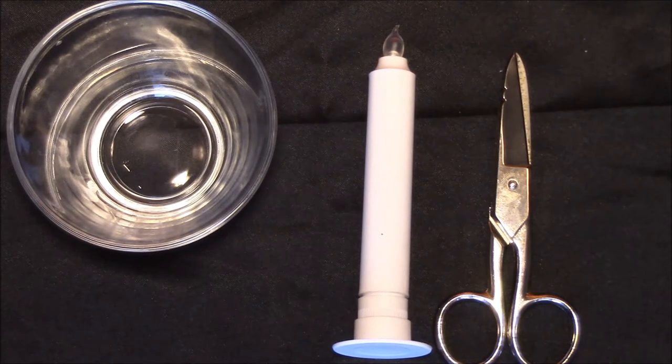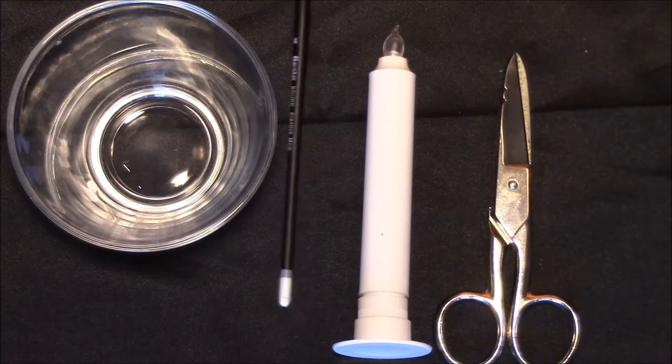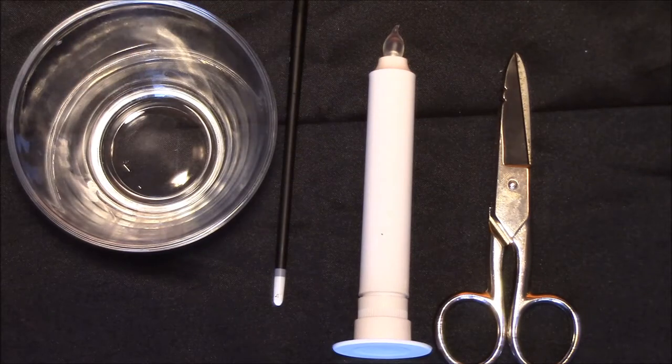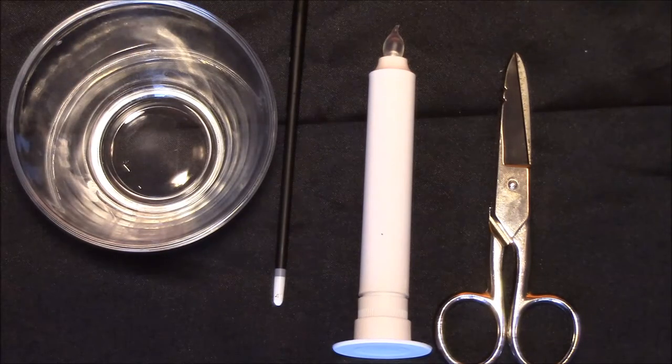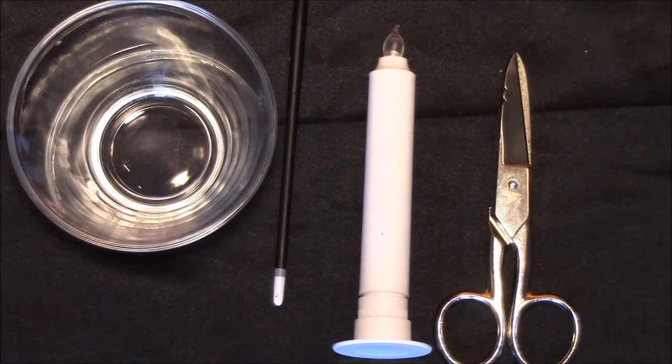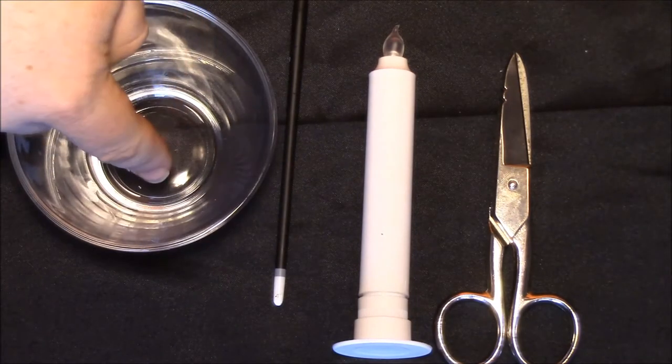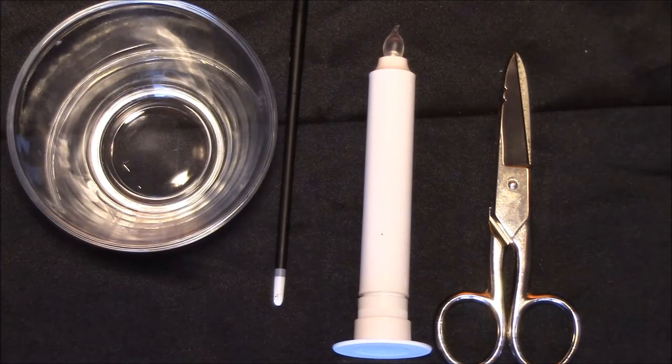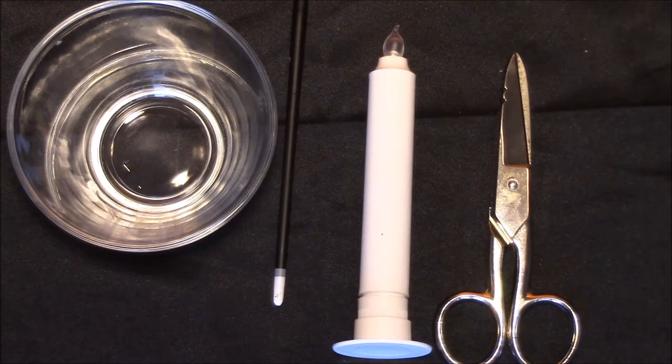Next thing you need is a poking device. Basically I'm using the end of a paintbrush. Once we get into the further steps, you'll see why we need it. This glass cup is just to hold the parts as we go through the modifications so they don't roll around.